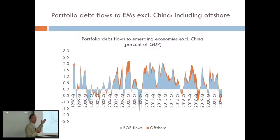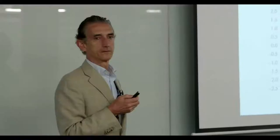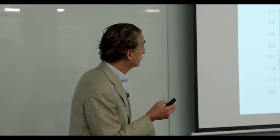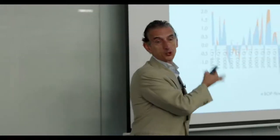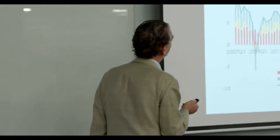I'm showing aggregate pictures for all the EM world and the shift is pretty dramatic. From a BOP perspective, most EMs had negative flows during the first half of 2022. The big ones would be Mexico, also Poland, and a variety of others.